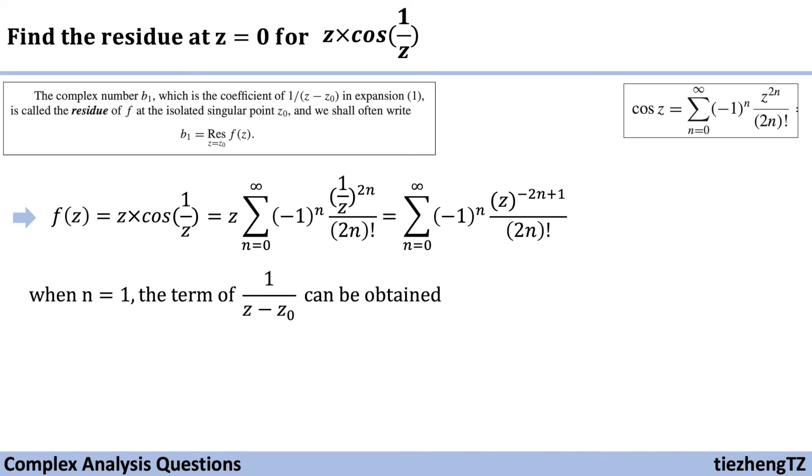And when n equals 1, the corresponding coefficient is minus 1 to the power of 1 over 2 times 1 factorial. We just need to replace n with 1. So the coefficient becomes minus 1 half. So now we can say the residue of the given function z times cosine 1 over z at that isolated singular point z equals 0 is minus 1 half.